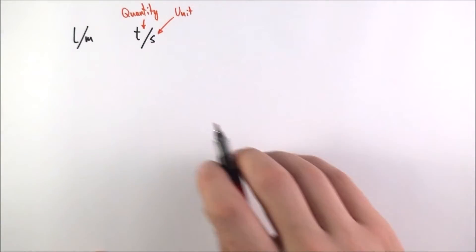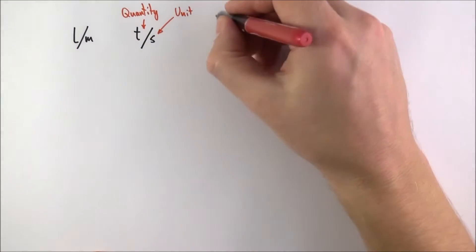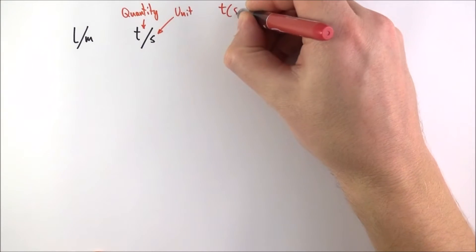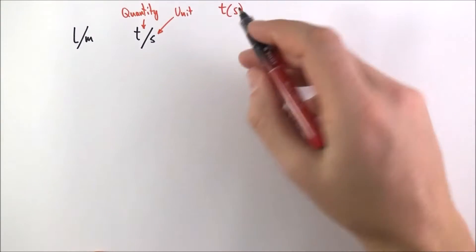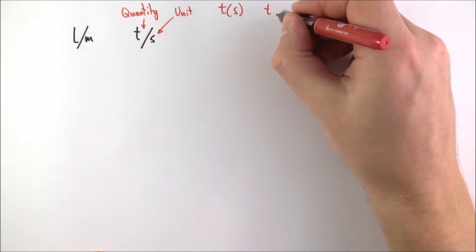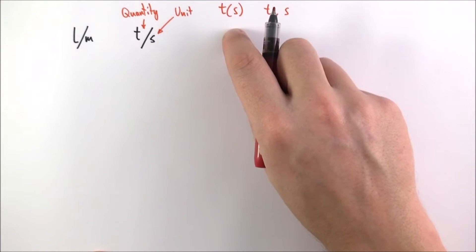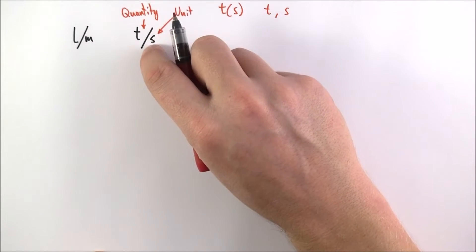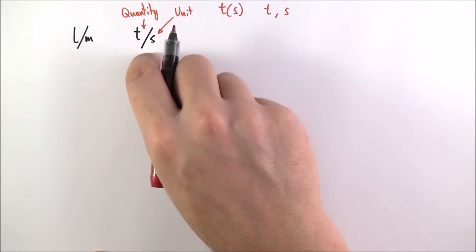So here I have my quantities and my units. Now we can do that in other ways. We might say that we have time in seconds or it might be that we say we have time comma seconds but by far the simplest and I think the best way is to have one of these slashes between the two and that's the accepted format.